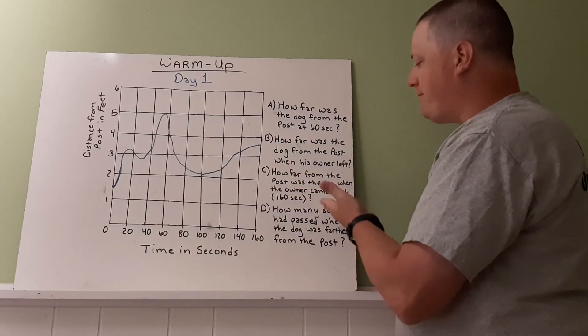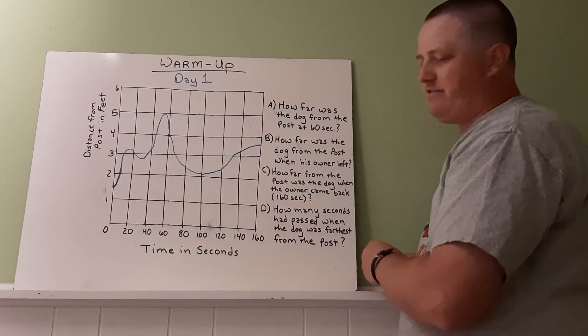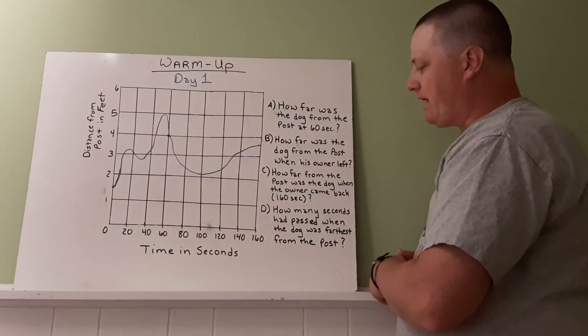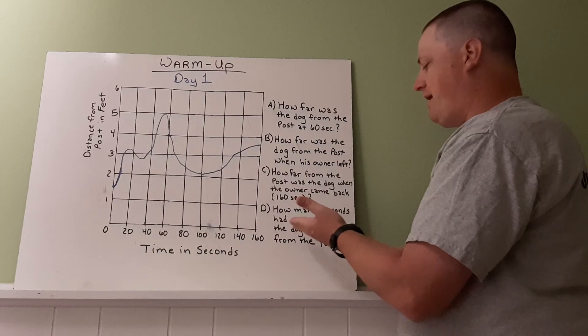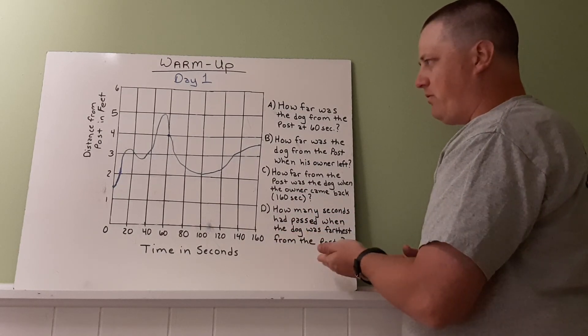How far from the post was the dog when the owner came back? That's 160 seconds later. And lastly, how many seconds had passed when the dog was farthest from the post?